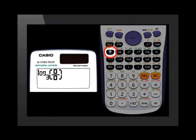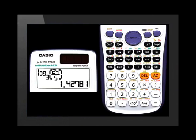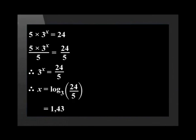Now we punch in 24 and move to the denominator. Then we just punch in 5 and press equals. This gives us an answer of 1.42781. We round this off to be 1.43.